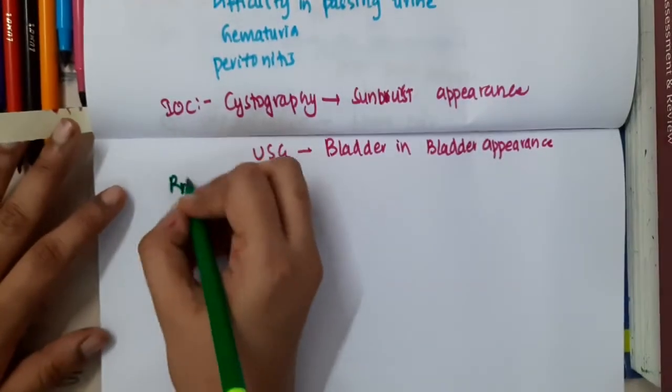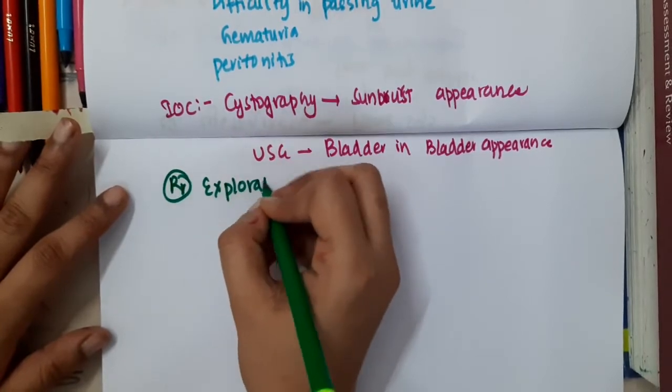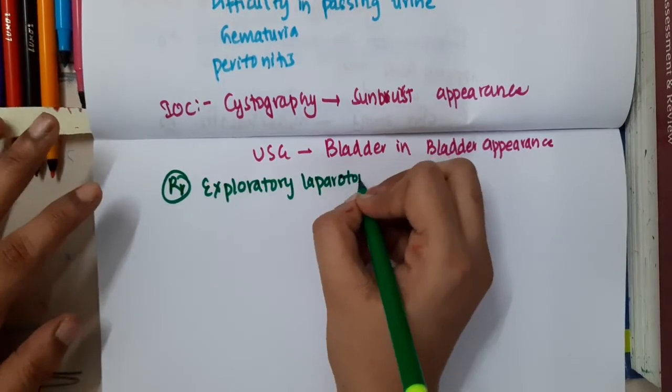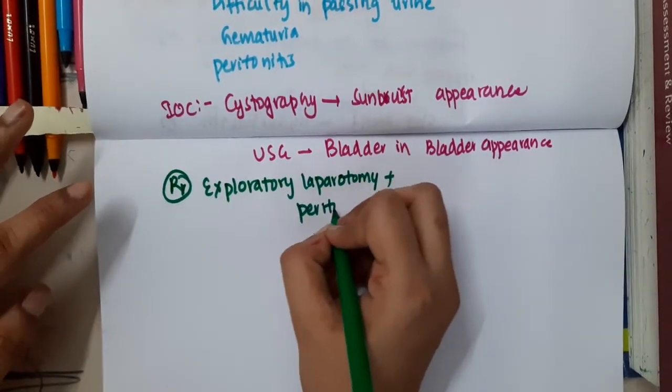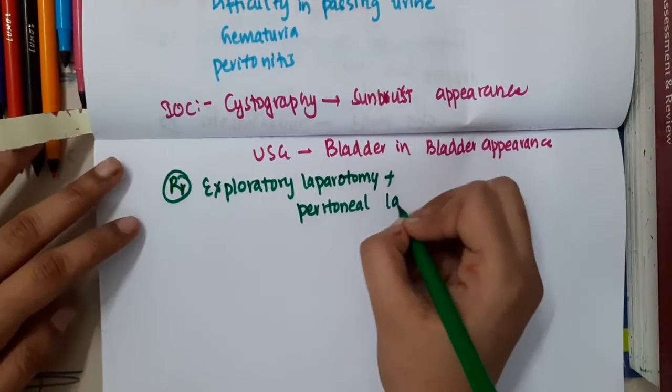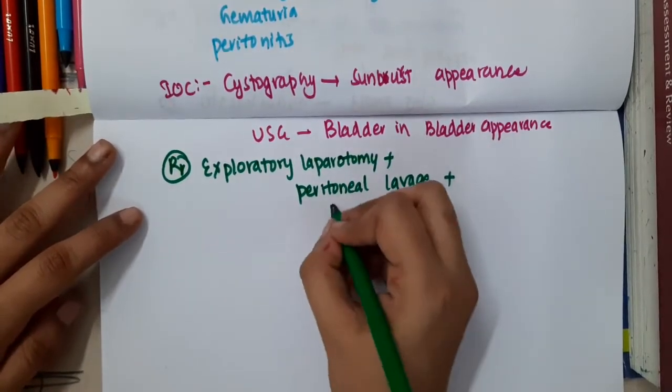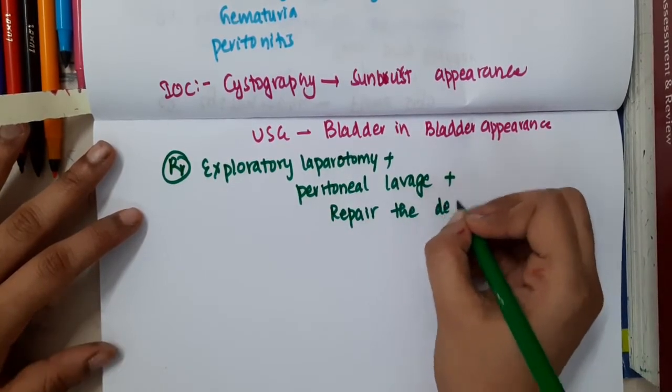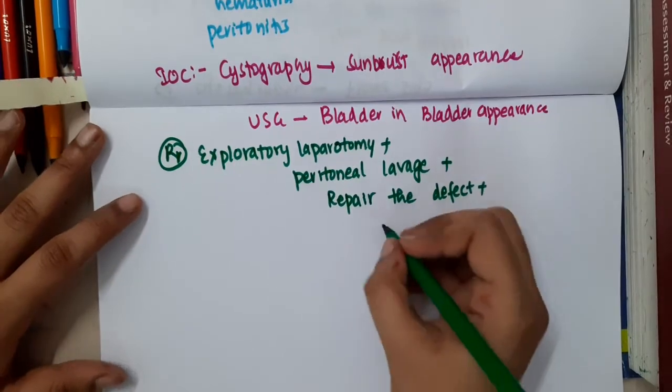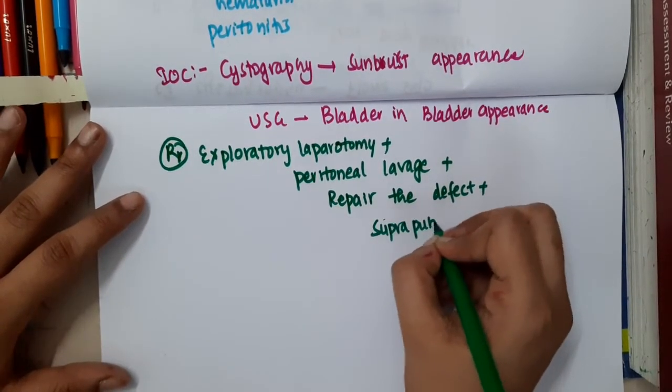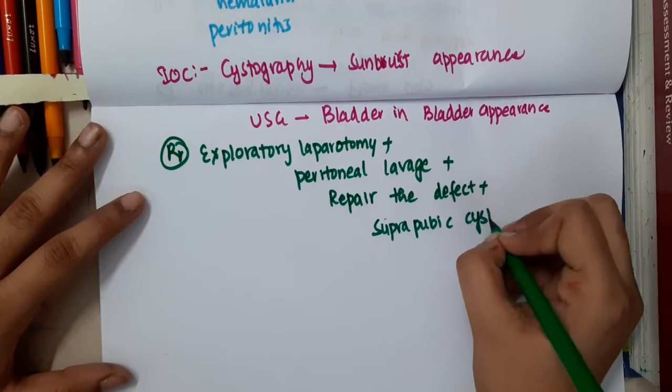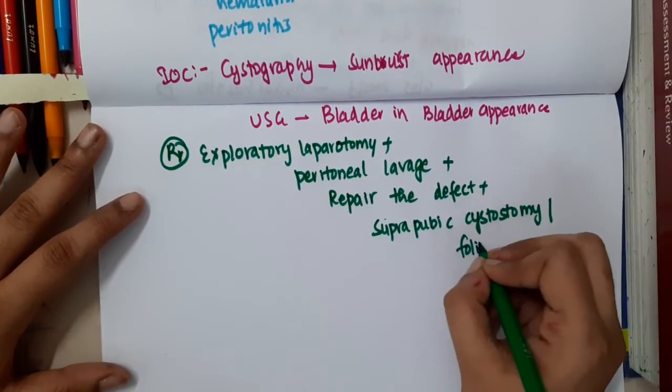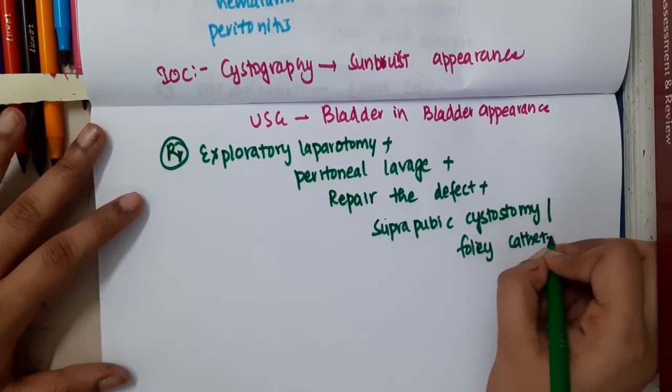For treatment, exploratory laparotomy can be done with peritoneal lavage because there is urine which is extravasated in the abdominal cavity, and then you will have to repair the defect. After repairing the defect, you should do suprapubic cystostomy for drainage of the bladder, or you can do Foley catheterization for further drainage of the urine.